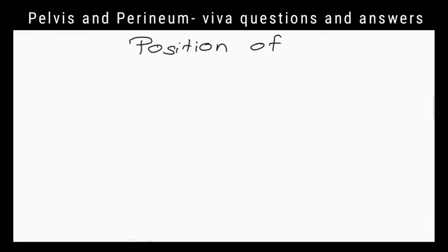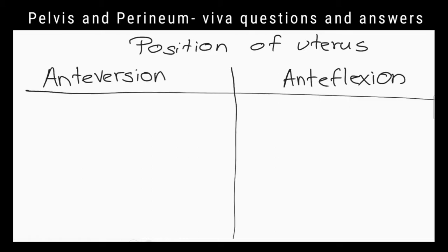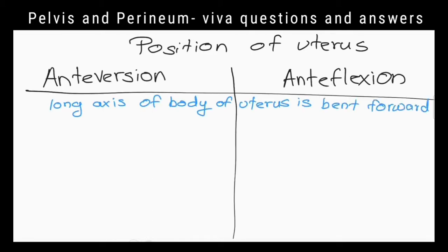What is meant by anteverted uterus? When the long axis of the body of the uterus is bent forward on the long axis of the vagina, it is called anteverted.